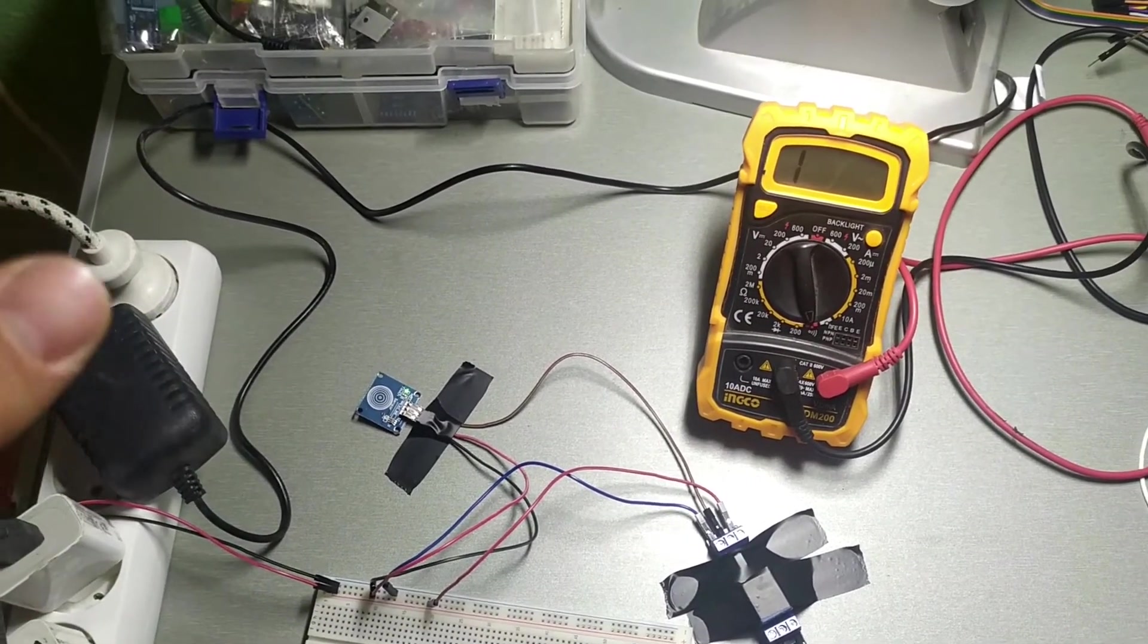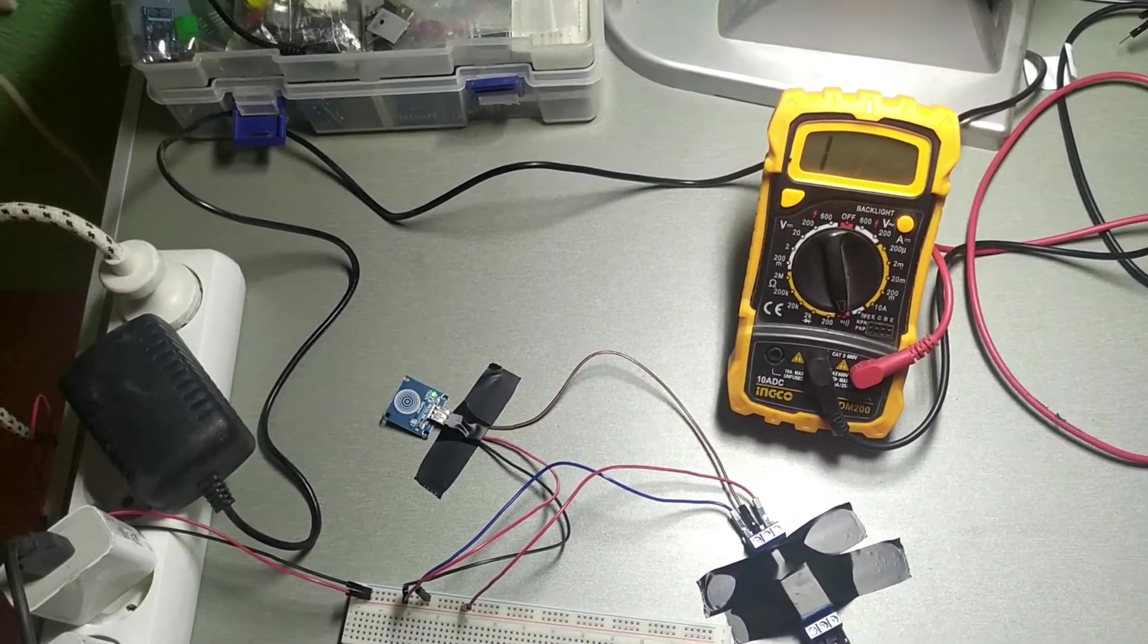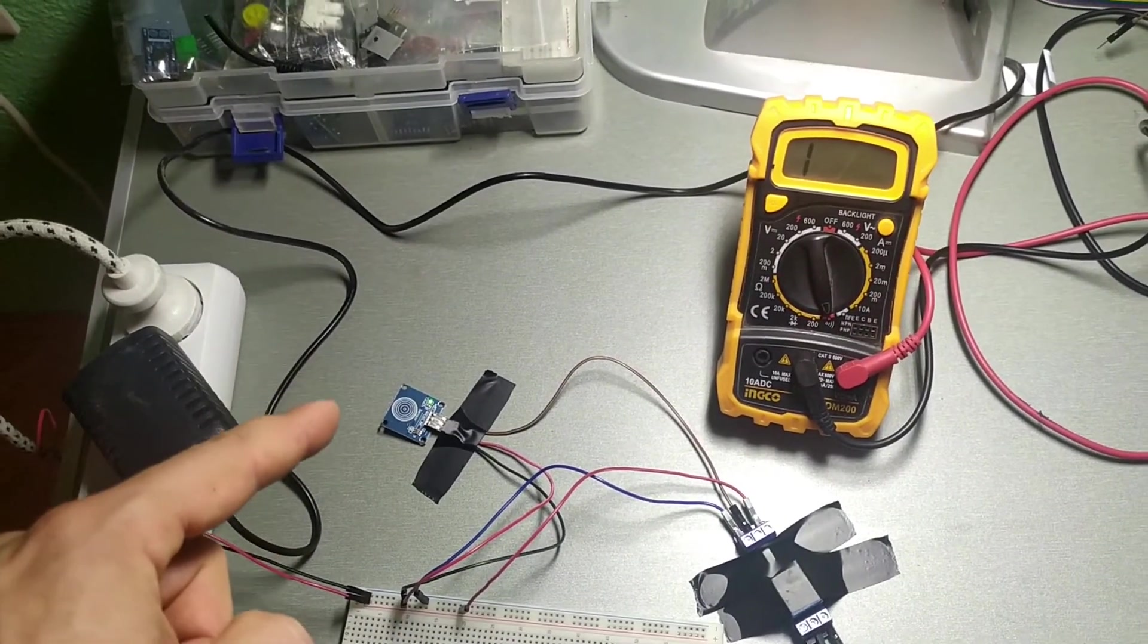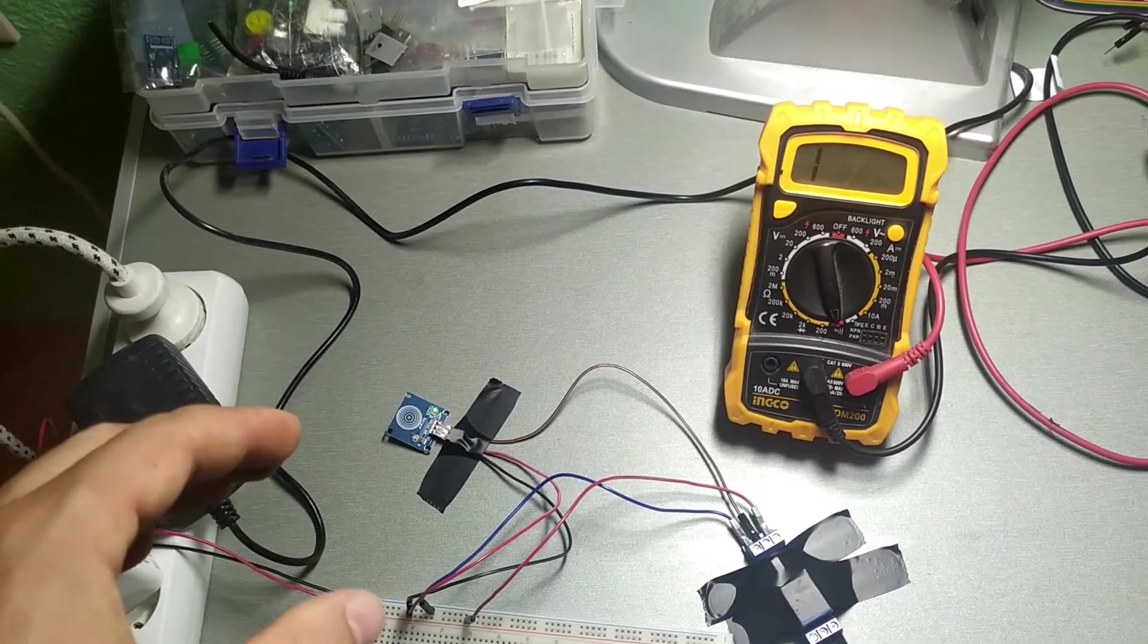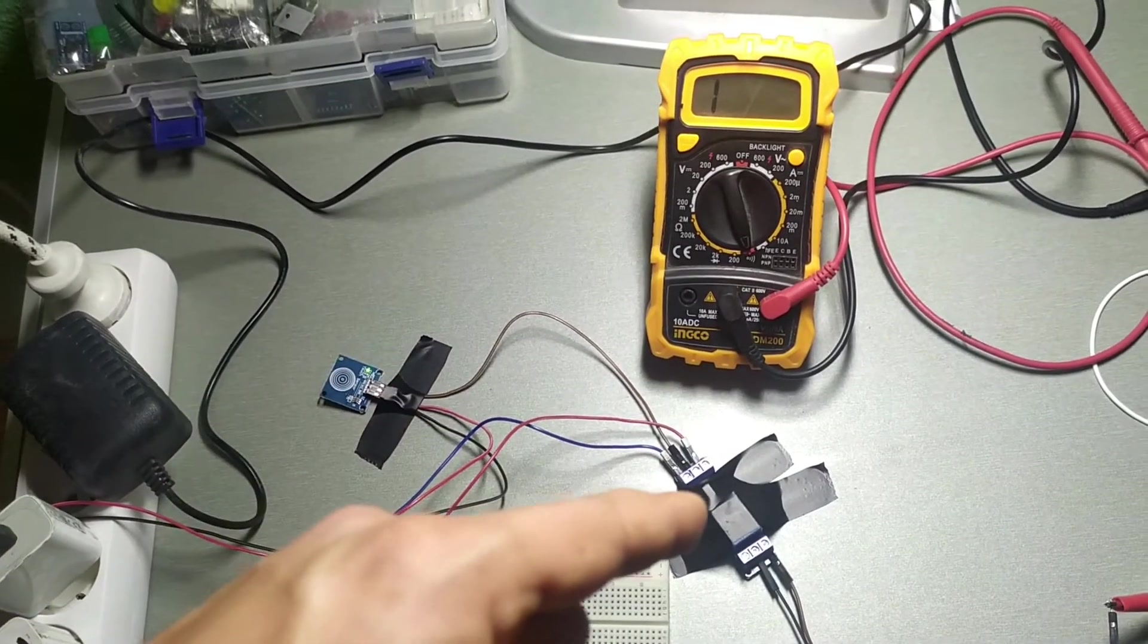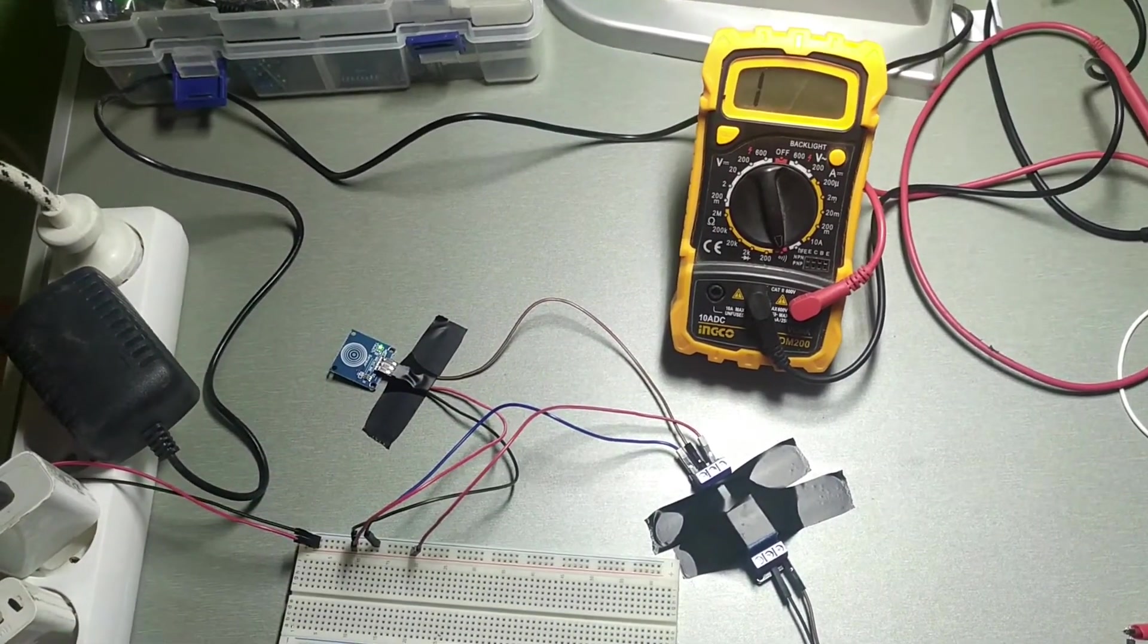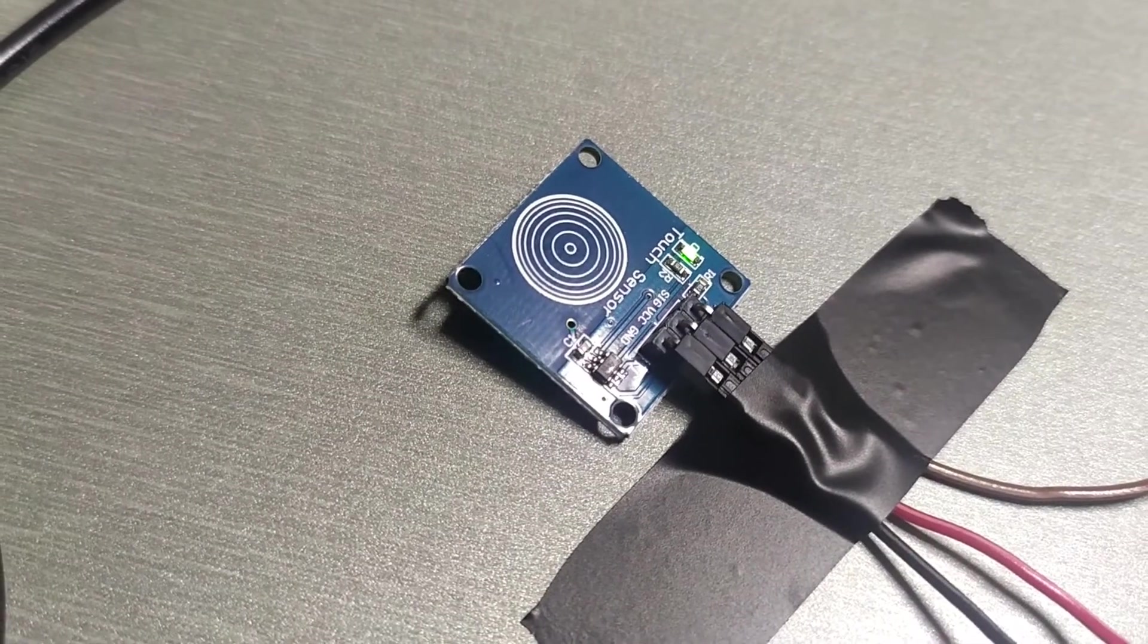We are going to be experimenting a little bit with it and we are going to try to tweak it. We can use this sensor in order to start something just by touching it. By using this sensor we can start some small loads, but we can also use its signal pin in order to start a relay or some other components that can start some bigger loads, as you can see in this example here.